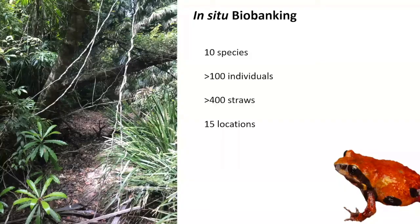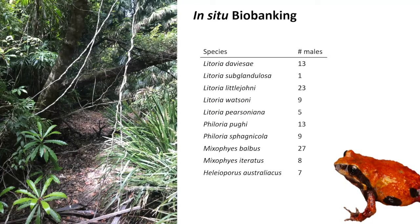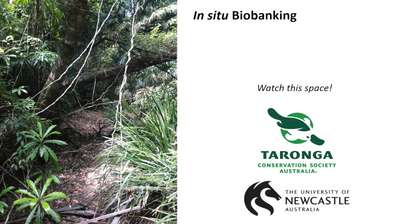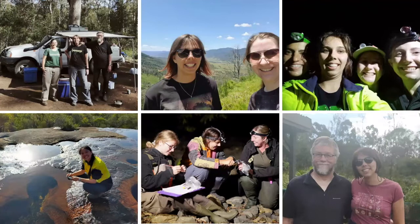We targeted 10 species during this grant and collected over 100 individuals, from which we collected over 400 straws of genetic material from 15 locations down the east coast of Australia. These straws are stored at the Taronga Cryo Diversity Bank in Sydney — Taronga was a collaborator on this project. We haven't done much analysis on the quality control straws yet, but we plan to in the near future. This was a very big project involving a lot of people, and if anybody's thinking about doing anything like this, please feel free to reach out.